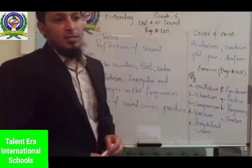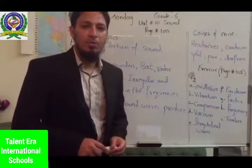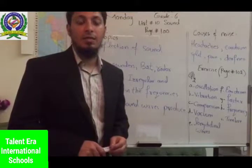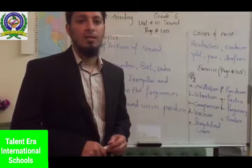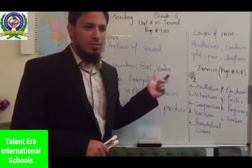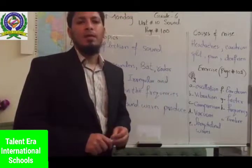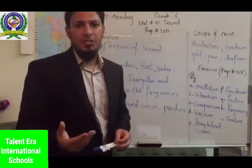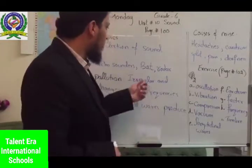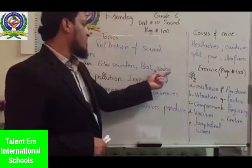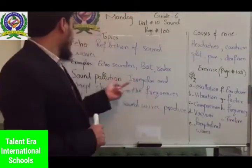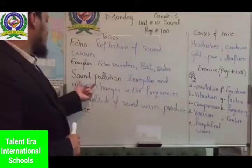Another example is radar. Radars are devices used at airports to find out how many aircraft are in the air. However, they do not use sound waves — they use radiation instead of sound waves. So radars are devices used to find out aircraft in the air.